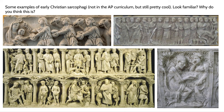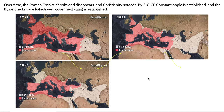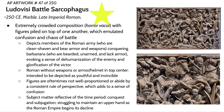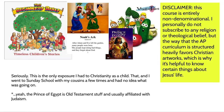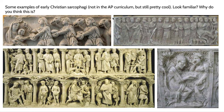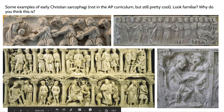Early Christian sarcophagi are very similar in form to the Ludovici Battle Sarcophagus from the previous unit — figures grouped in large numbers, tightly packed together, with proportions that are not entirely naturalized. We see many traditions from the late Roman Empire carrying over into early Christian art. For those familiar with the New Testament and parts of the Old Testament, narratives can be identified: the Adoration of the Magi with Mary, Jesus, and the three kings; scenes from the Bible including David and the lions; and Adam and Eve.